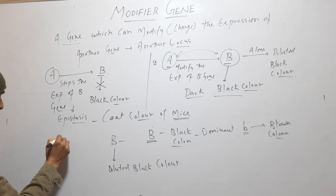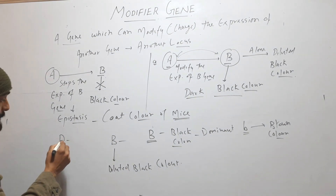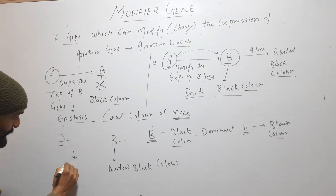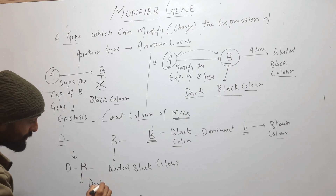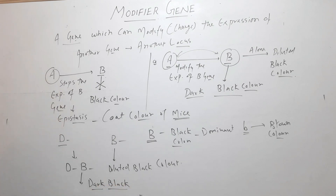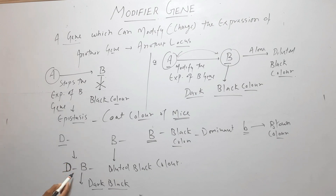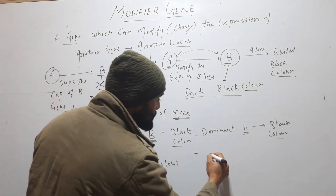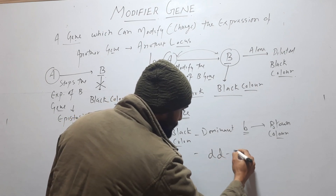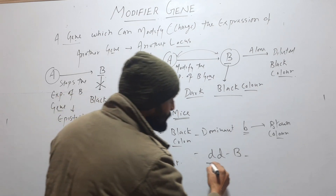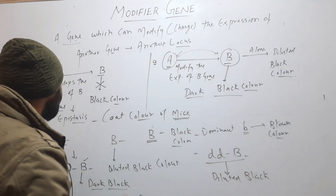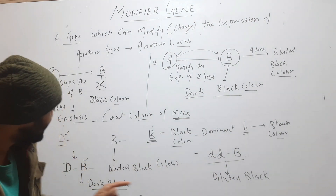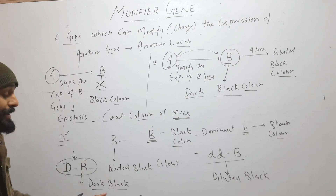But in the presence of another gene, capital D — when the genotype is capital D and capital B — it produces dark black color. In absence of this capital D gene, if the genotype is small d, small d and capital B, then the color will be diluted black. But when the D gene is present, the color will be dark black.